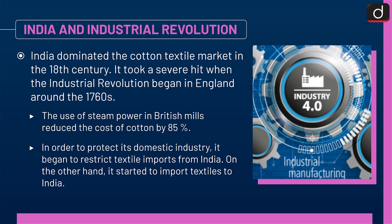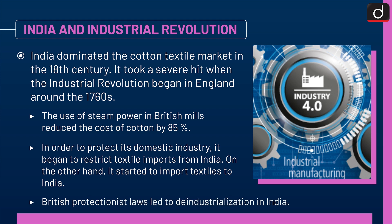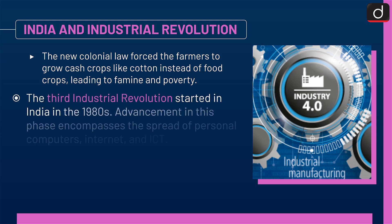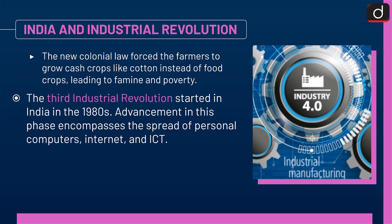On the other hand, Britain started to import textiles into India. British protectionist laws led to de-industrialization in India, and new colonial law forced farmers to grow cash crops like cotton instead of food crops, leading to famine and poverty. The third Industrial Revolution started in India in the 1980s, with advancements encompassing the spread of personal computers, internet, and ICT.